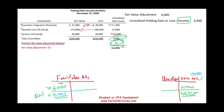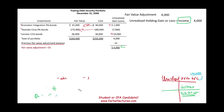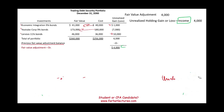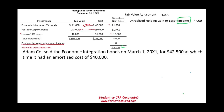Remember, if we have a prior adjustment, the entry might be a little more involved. We looked at this in the prior session on available for sale, and we will look at trading securities fair value adjustment from year to year in a different session. Now let's take a look at a future scenario. Adam sold the Economic Integration bond on March 1st, 20X1, for $42,500. At that time, the amortized cost was $40,000.